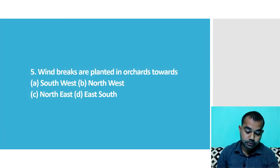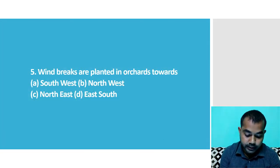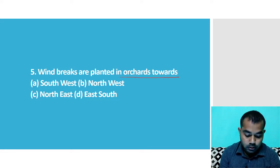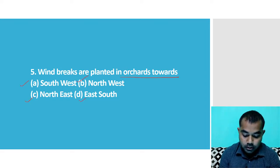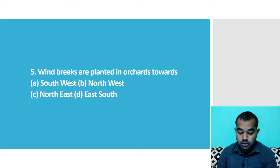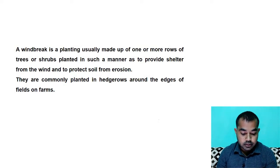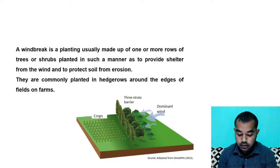The fifth question: windbreaks are planted in an orchard towards which direction? Options are southwest, northwest, northeast, and east-south. The right answer is northwest. Here you can see the structure of a windbreak.